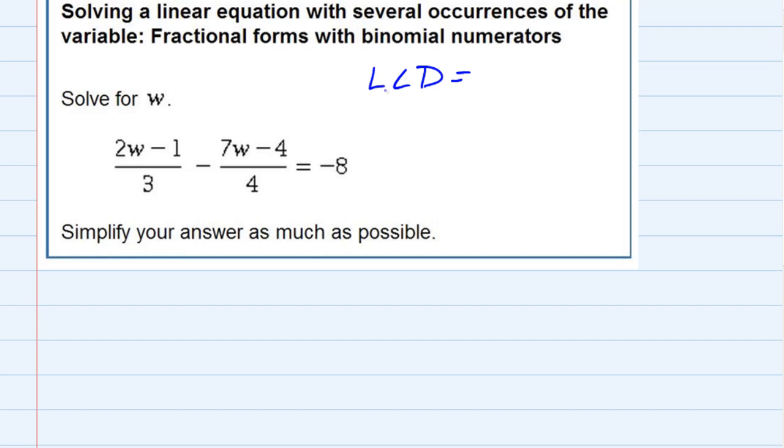We're going to use that to get rid of our fractions. So first of all, for the LCD, our denominators are 3 and 4, so the lowest common denominator is 12.